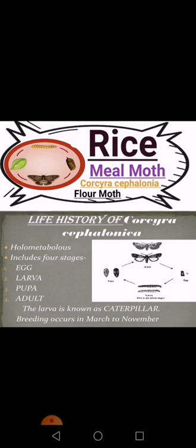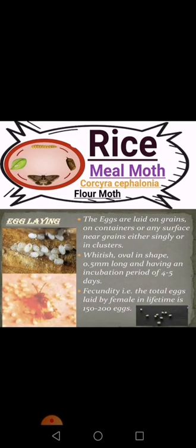Breeding occurs from March to November — March, April, May, June, July, August, September, October, and November are its breeding months. The eggs are laid on grains, on containers, or on any surface near grains, either singly or in clusters.